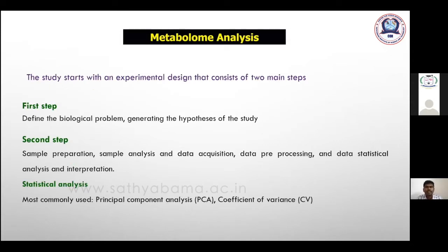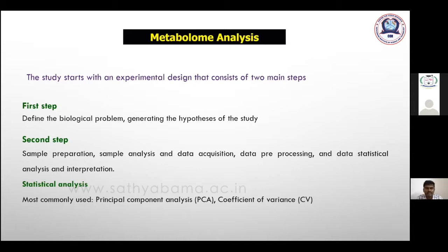The study starts with an experimental design consisting of two main steps. First, we have to define the biological problem and generate the hypothesis of the study. Then we go for sample preparation and extraction. Once extraction is over, we have to select the proper derivatization reagents, because derivatization is very important in GC-MS.